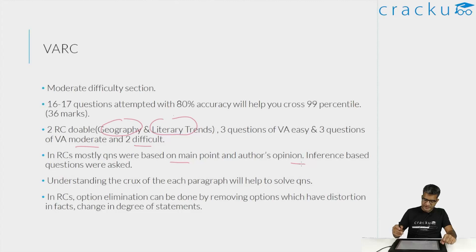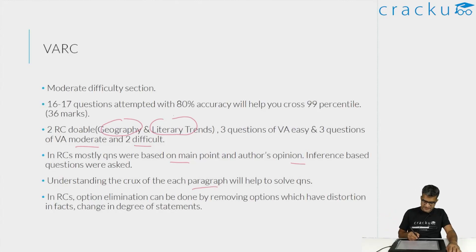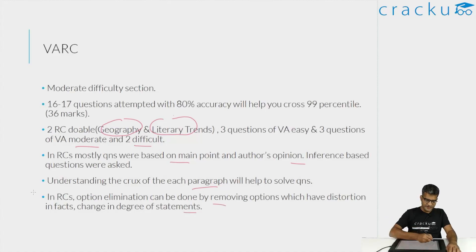RC questions, as you'd expect, are inference-based. There was no objective question that can be directly answered from the passage — all of them are inference-based, which is why the questions felt slightly on the trickier side. Understanding the crux will definitely help you. Option elimination, like I mention in most of my analyses, is very important in RCs.